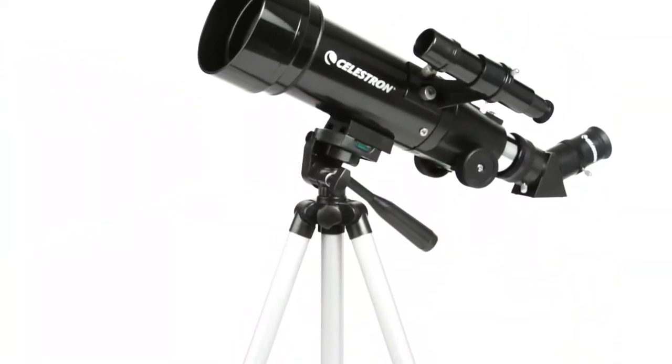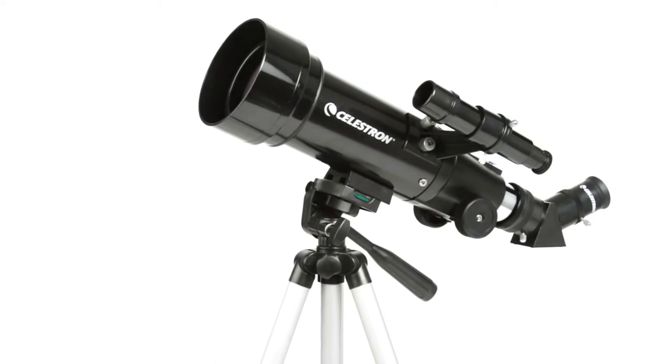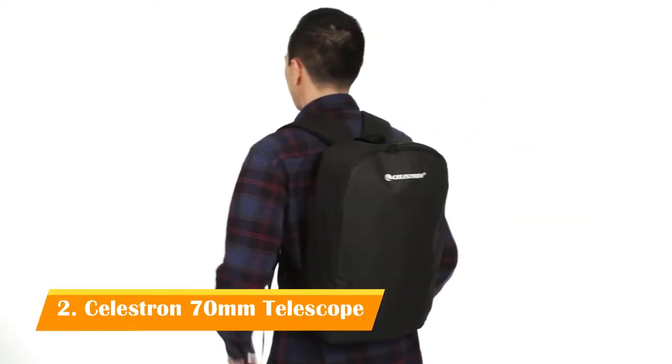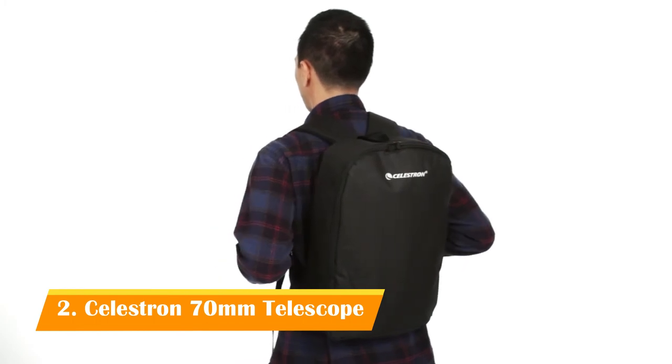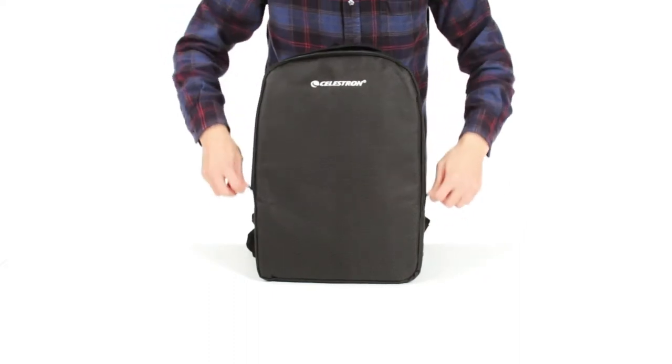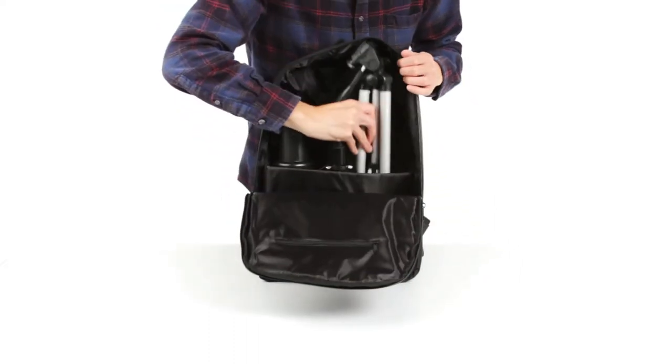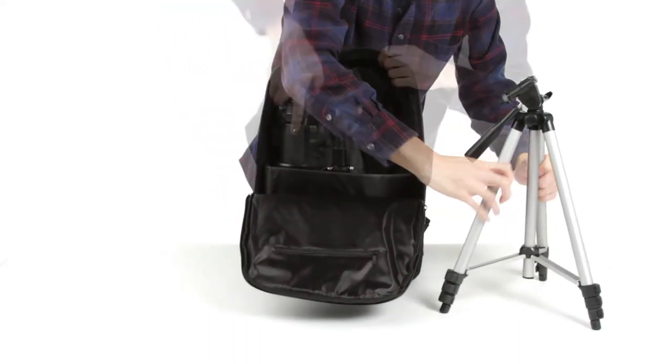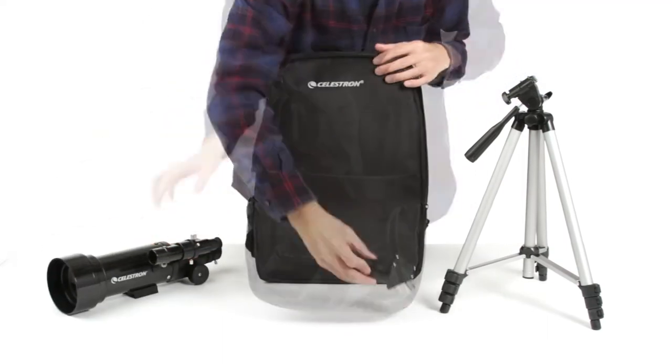It's never been easier to take a high-quality telescope on the go. Each travel scope includes a durable canvas backpack, perfect for taking along on a camping trip or hike. When you arrive at your destination, assemble the telescope and you'll be ready to observe in minutes with no tools necessary.